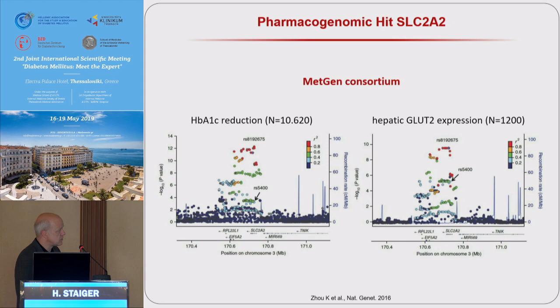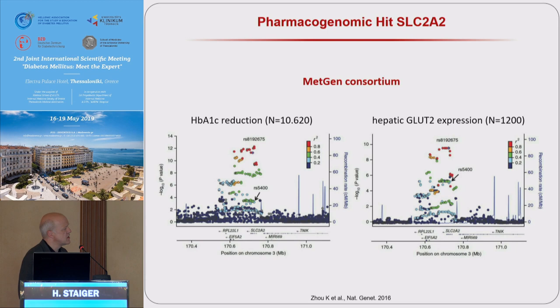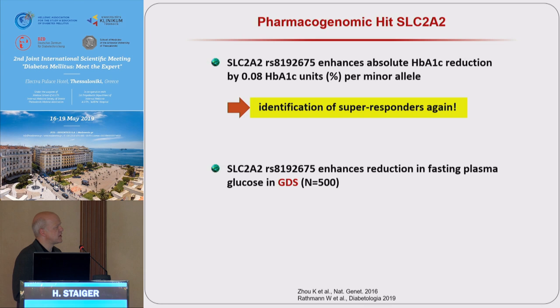Another finding was made by the METGEN Consortium, who found by a genome-wide screen several polymorphisms around SLC2A2, the gene encoding glucose transporter 2. They also had liver biopsies from 1,200 patients and found that indeed these SNPs increase GLUT2 expression — very functional data. But again, this is an identification of super responders. The SNP with the lowest p-value enhances absolute HbA1c reduction by 0.08 HbA1c units per minor allele. The effect size is somewhat lower than that of ATM, and this was replicated, but again, these are super responders.